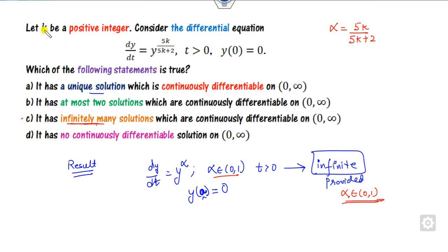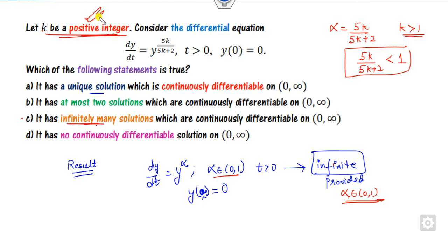If I consider this as alpha and prove that it lies between 0 and 1, then my answer will be here. Since K is a positive integer, K will be greater than or equal to 1. We know that 5K upon (5K+1) is always less than 1, and since K is a positive integer, this value is always greater than 0. So it lies in the open interval (0, 1). These conditions are satisfied, so the right answer is infinite many solutions. This is a shortcut trick.